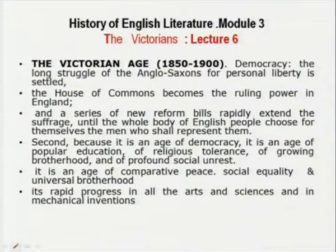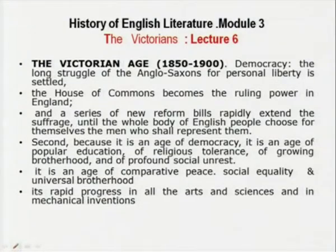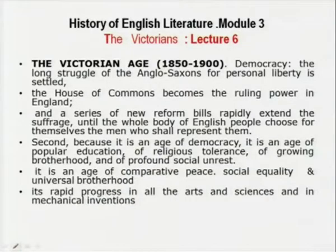The Victorian age runs from 1837, when Queen Victoria came to the throne, to her death in 1901 — a long period of almost 63 years. On the surface, we find democracy as a guiding force. The long struggle of the Anglo-Saxons for personal liberty was settled. The House of Commons became a ruling power in England, a series of new reform bills came in, and monarchy was being overturned by democracy.